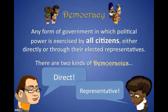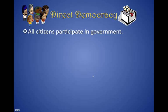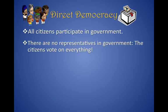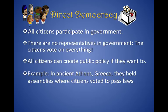In direct democracy, all citizens participate in government. There are no representatives — everybody votes on everything. On a Saturday, everybody meets up at the local hill, and all the citizens who can vote, vote. Everybody votes on all laws, and all citizens can create public policy if they want to. The classic example of this is ancient Athens, where everybody met at assemblies and voted to pass laws.